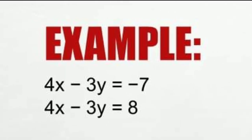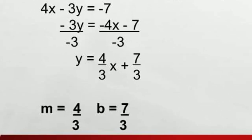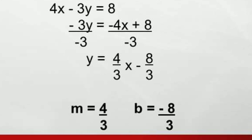Our second example: 4x − 3y = −7 and 4x − 3y = 8. Transforming the first equation: −3y = −4x − 7, divide both sides by −3, giving y = (4/3)x + 7/3. The slope is 4/3 and the y-intercept is 7/3. For the second equation: −3y = −4x + 8, divide both sides by −3, giving y = (4/3)x − 8/3. The slope is 4/3 and the y-intercept is −8/3. The slopes are the same and the y-intercepts are different. That is an inconsistent system.